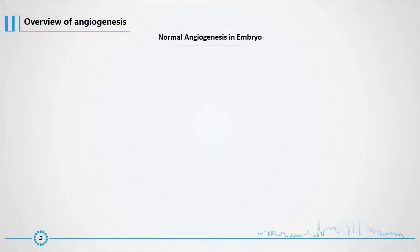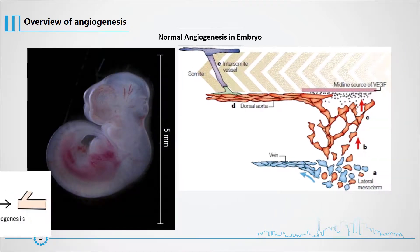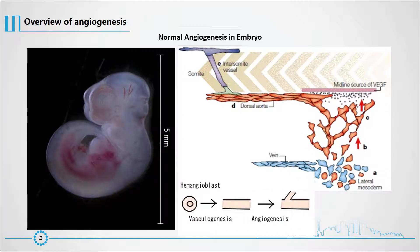Hemangioblasts differentiate from mesodermal stem cells and give rise to hematopoietic stem cells and angioblasts. Angioblasts are a cell type with the potency to differentiate into endothelial cells but have not yet acquired all characteristic markers of endothelial cells. Vasculogenesis is the de novo formation of blood vessels from angioblasts.